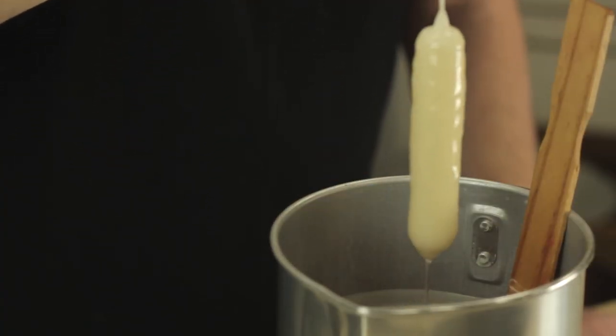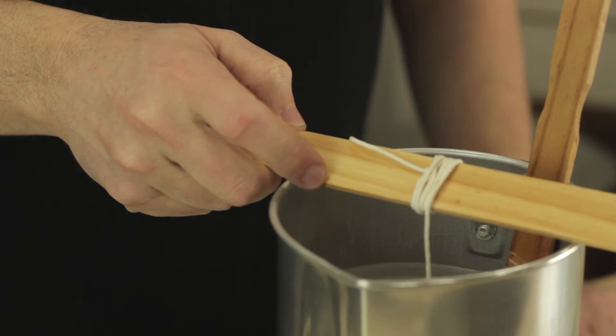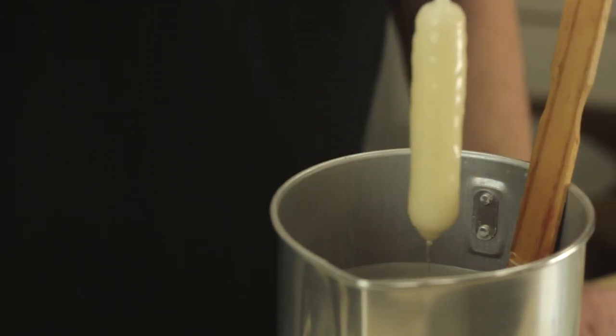Now as I do this, if the wax is at the right temperature, I can just hold it up for about 30 seconds and let the wax dry long enough that you don't see anything dripping, and then it's ready to submerge again.